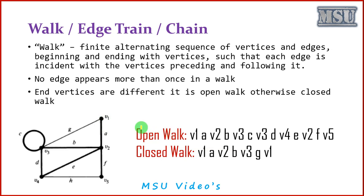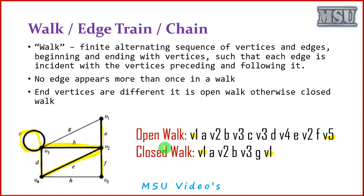An open walk means the starting vertex is different from the ending vertex. For example, starting from v1, visiting v2 through edge a, then v3 via edge b, then using loop c to revisit v3, then moving to v4 via edge d, then to v2 via edge e, and ending at v5 via edge f. So in an open walk, we start from v1 and end at v5.